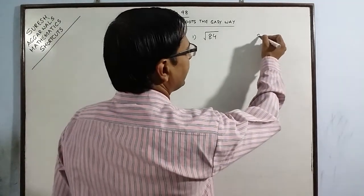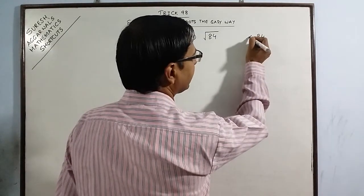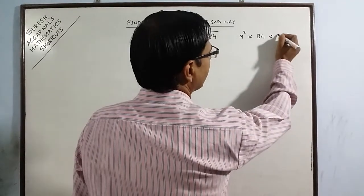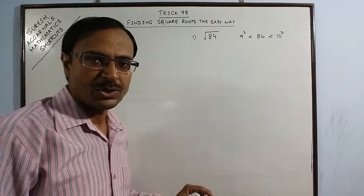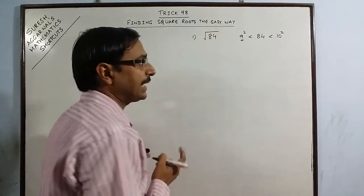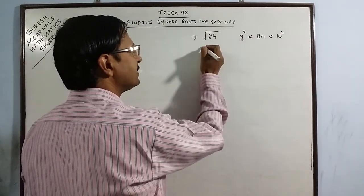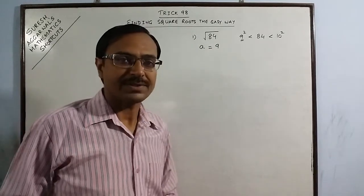Now we know that the number 84 is greater than the square of 9 which is 81 and less than the square of 10 which is 100. So it lies between 9 and 10. So what I do is the lesser of this square, 9, I will consider this 9 as say a.